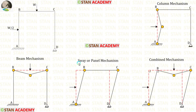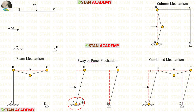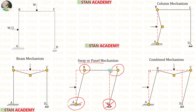Now let us do the sway mechanism. First we check the end supports. If the end support is fixed, there will be a plastic hinge. At point A there is a fixed support, so there will be a plastic hinge. At point D we have a hinged support, so there will be no plastic hinge. Then we look at the joints — joint B and joint C — and in these joints there will be plastic hinges.